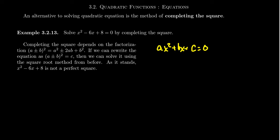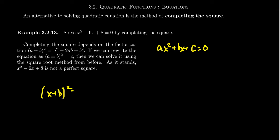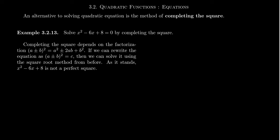The idea behind completing the square for a quadratic equation is to change this quadratic polynomial into one that's a perfect square trinomial. You'll remember the factorization that if you take (a plus or minus b) squared, that's going to equal a squared plus or minus 2ab plus b squared. The advantage is that if we have a perfect square trinomial, it factors as (a plus b) squared or (a minus b) squared. So if we have something like (x plus b) squared equals c, then we get x plus b equals plus or minus the square root of c, and then x equals negative b plus or minus the square root of c. We can solve the quadratic equation if we can get a perfect square trinomial by the square root method. That's what completing the square is all about.